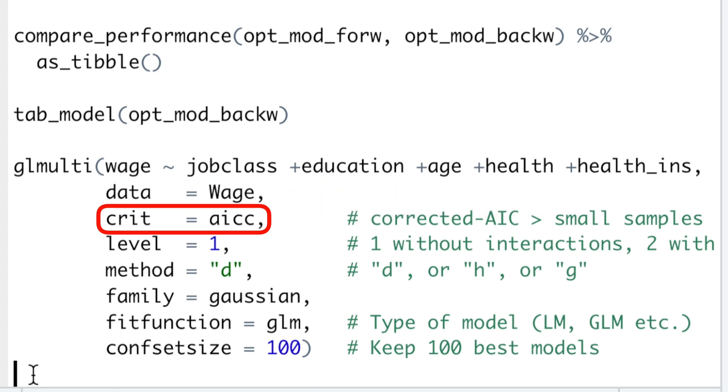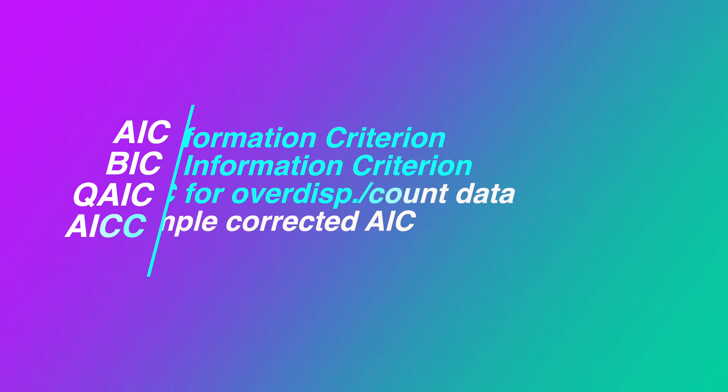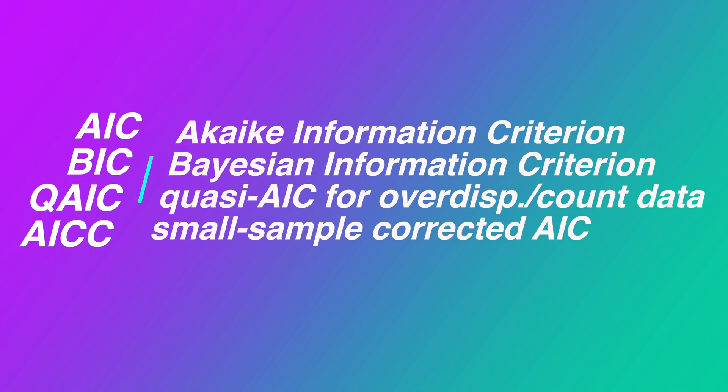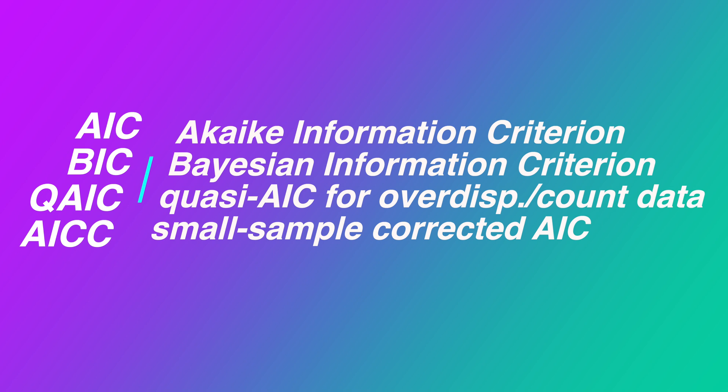CRIT specifies the information criteria to be used. The default is the AIC information criteria. Other options are the Bayesian information criteria, quasi-AIC for over-dispersed or count data, and the small sample corrected AIC,